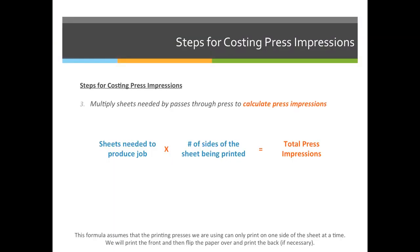So now this is the new math formula for costing press impressions. The first two you should already know — we've done that three or four times already. But once we have the number of sheets, we can figure out the number of impressions needed to print a job. An impression means a sheet of paper goes through the press. So we're going to multiply the number of sheets required for a job by either 1 or 2: multiply by 1 if printing one side, or by 2 if printing both sides.